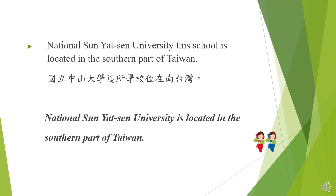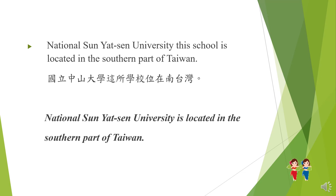再看這個句子：National Sun Yat-sen University, this school, is located in the southern part of Taiwan。從中文的角度來看這個句子好像非常通順，但從英文角度來看確實有瑕疵。因為 National Sun Yat-sen University 國立中山大學已經講得很清楚了，中文的 this school 這所學校其實根本是多餘的，所以應簡寫成：National Sun Yat-sen University is located in the southern part of Taiwan。